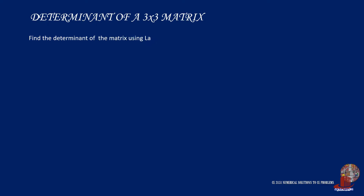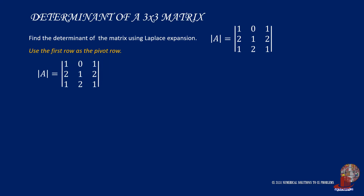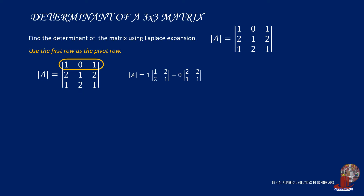For example, find the determinant of the matrix using Laplace expansion. We take the first row as the pivot row. The first term is A11, or positive 1, multiplied by the minor containing elements 1, 2, 2, and 1. Next, move to element A12, which turns negative — that is 0 multiplied by the minor containing 2, 2, 1, and 1. Lastly, take element A13 as positive 1 multiplied by the determinant of 2, 1, 1, and 2.